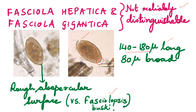It becomes very difficult to say this is Fasciolopsis buski or Fasciola hepatica or gigantica. In such cases, your diagnosis will depend upon what the patient is manifesting with — symptoms of the biliary tract or symptoms of the GI tract. Summary: Fasciola hepatica and gigantica produce big-sized eggs, 140 to 180 microns, operculated, with a rough or irregular ab-opercular end.